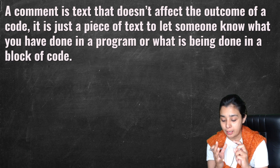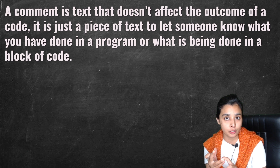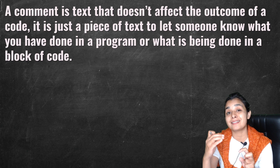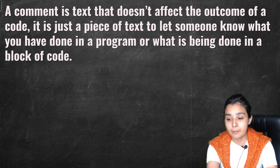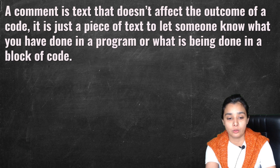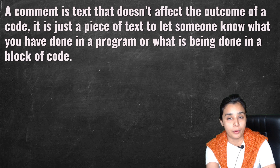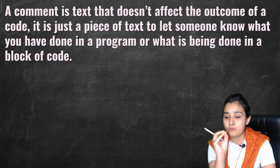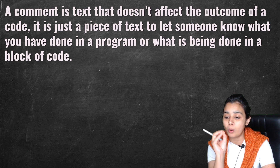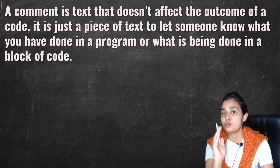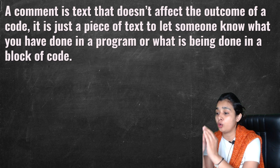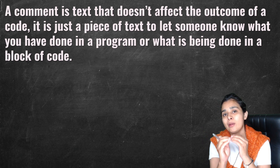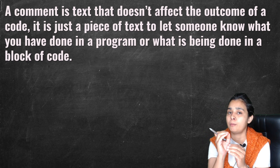We use comments in two ways: we use the hash for single lines, and when we use triple quotes, we use multi-line comments. The definition of a comment is: it is a text that doesn't affect the outcome of our code. It's just a piece of text to let someone know what you have done in the program — which variable, which function — just explain it with the help of comments, whether single-line or multiple-line.